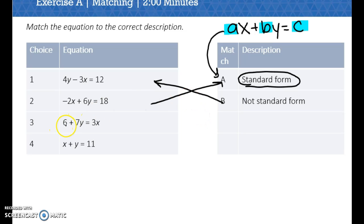Number 3 says 6 plus 7y equals 3x. Well, that's not following this pattern. So that would not be in standard form. And then the last one, it says x plus y equals 11. Although it looks like I don't have a coefficient, remember I do. That coefficient is that invisible 1. So this is essentially 1x plus 1y equals 11. So this would be in standard form.